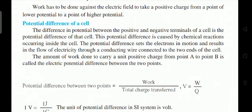Work has to be done against the electric field to move a positive charge from a point of lower potential to a point of higher potential. The potential difference of a cell is the difference in potential between its positive and negative terminals. This potential difference is caused by a chemical reaction inside the cell.